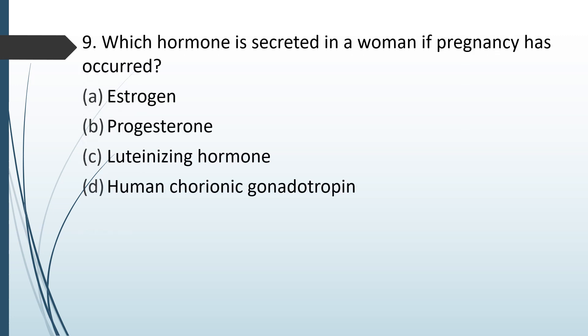Which hormone is secreted in a woman if pregnancy has occurred? Option A: estrogen. Option B: progesterone. Option C: luteinizing hormone. Option D: human chorionic gonadotrophin.